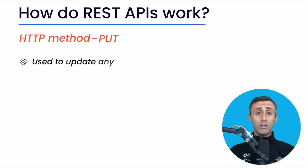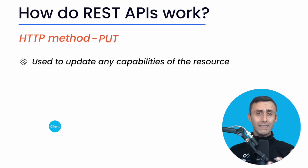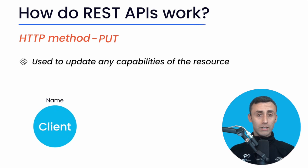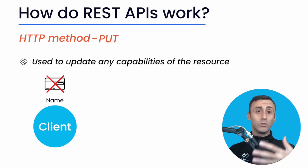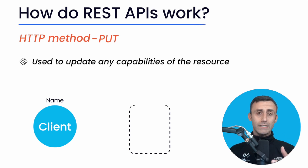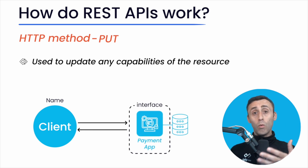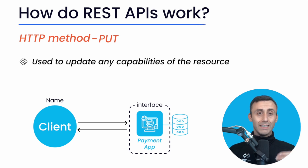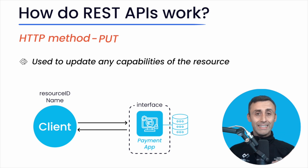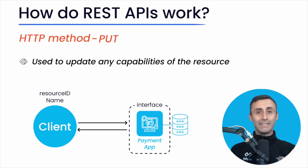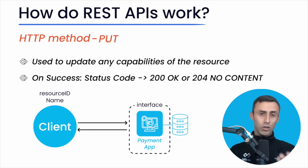PUT: It's used for updating capabilities of the resource. Suppose the client wants to update just the name on credit card details of a specific user — we don't have to save all the details as we did with the POST method. In such cases, we use the PUT method. The client sends a resource ID along with the PUT request. This resource ID is a unique identifier of the user whose name is to be updated. On a successful update, the server returns HTTP status 200, or 204 if not returning any content in the body.